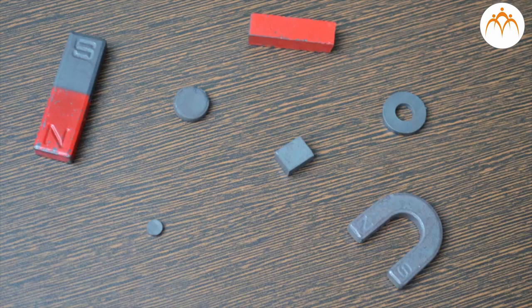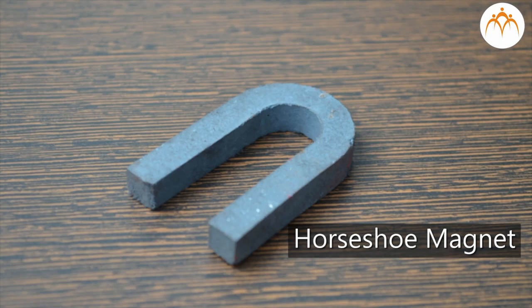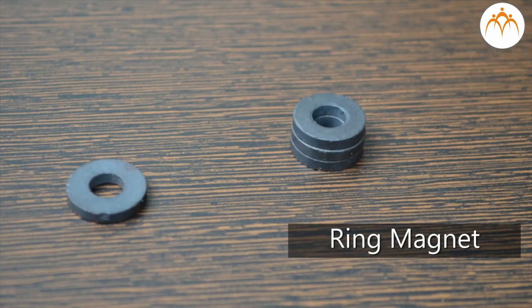The round magnet we found in the speaker has round magnets. Magnets come in different shapes and sizes too. Horseshoe magnet, bar magnet, ring magnet, cylindrical magnets are some of the examples of magnets.